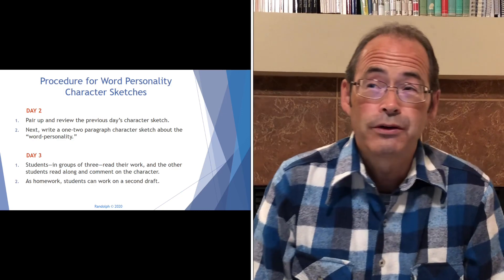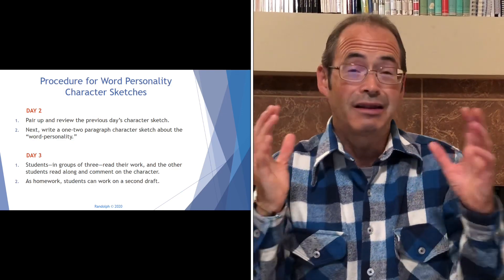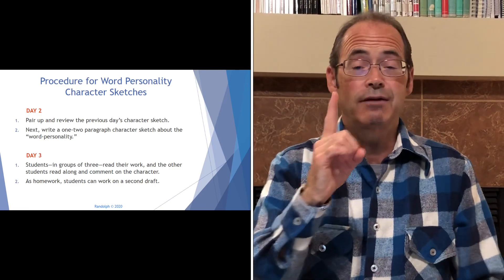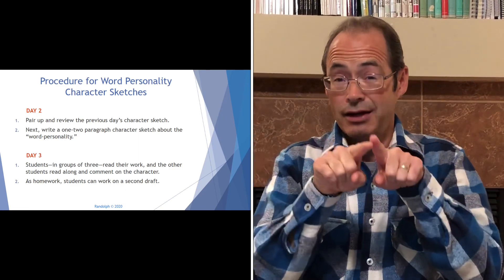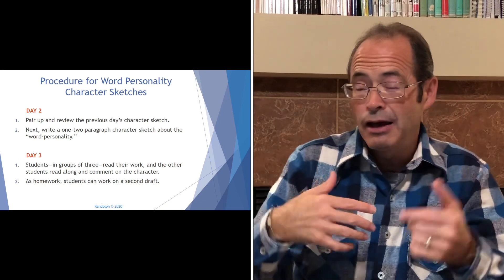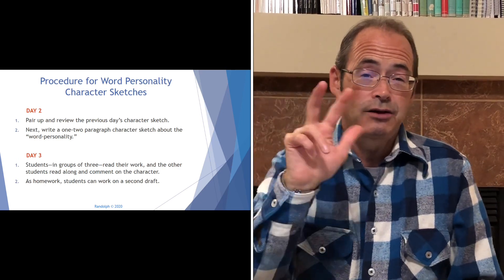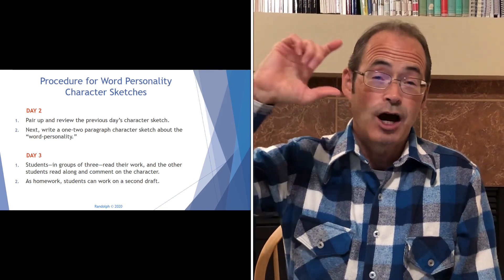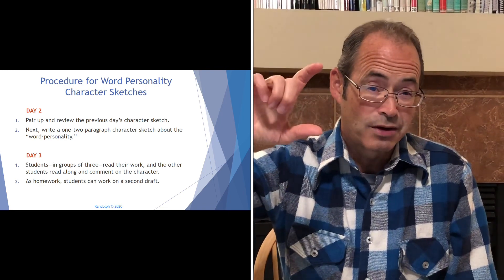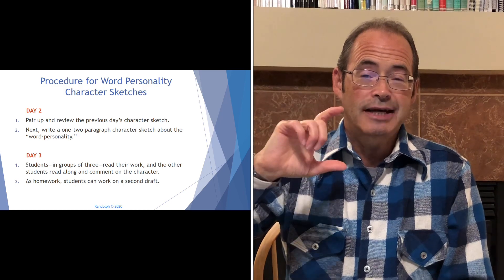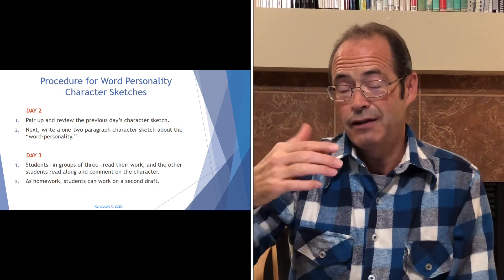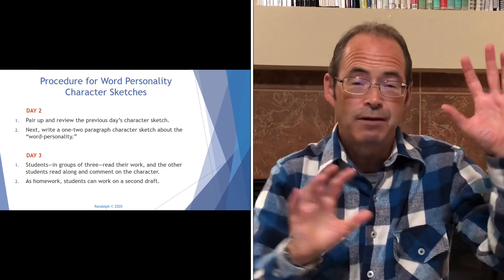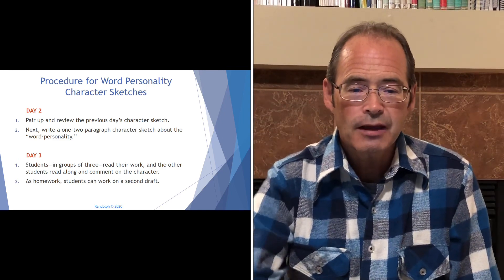A word about the length of these: you can do a simple one paragraph, which was basically a description of the character. But we got more elaborate — two or three paragraphs where paragraph one was a problem the word had, the second paragraph was the solution, and the third was a resolution and conclusion. So you can make variations of this if you'd like.